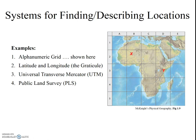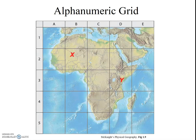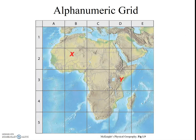The alphanumeric grid system is fairly intuitive, and likely many of you have used this type of system. It was commonly used in road atlases, though GPS and smartphones have dramatically reduced our reliance on them. See figure 9 for an example. The location of the X on the map would be described as B2. What is located at C5? Hopefully you found the region that includes the tip of South Africa. Similarly, location Y would be denoted as D3.